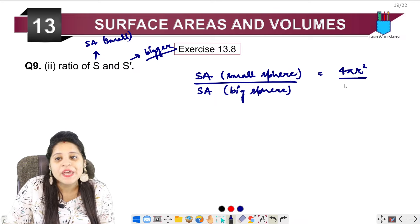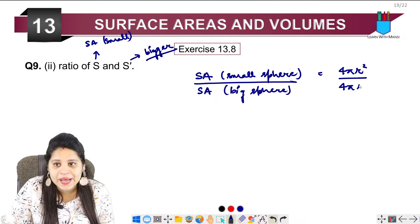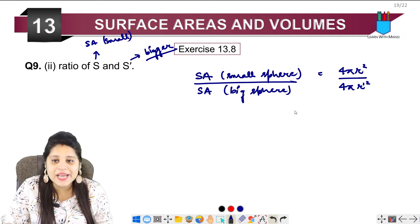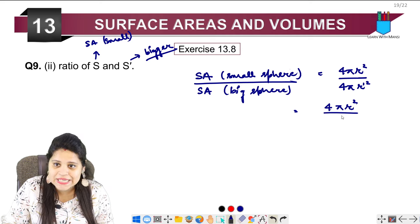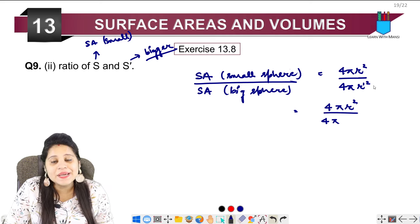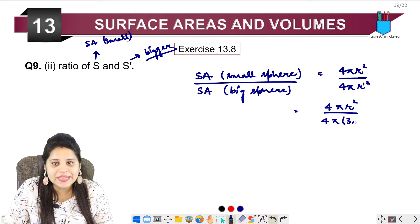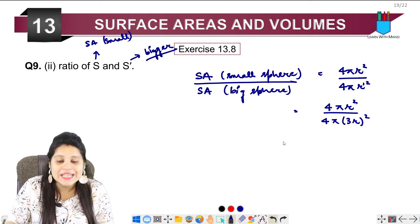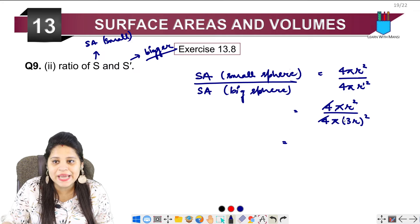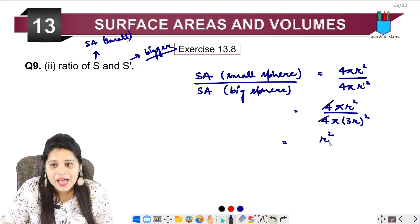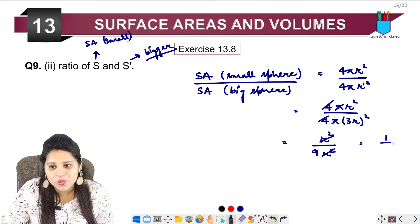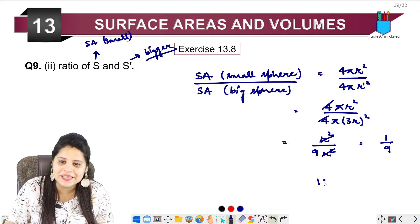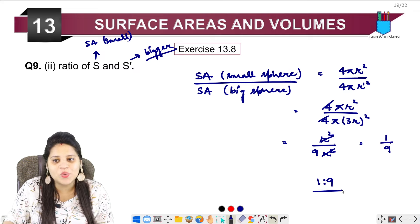The formula is 4 pi r square upon 4 pi r dash square. This will be r square upon - r dash is 3r, so it's 3 squared which is 9 - 9r square. 4 and pi cancel, r square cancels with r square, leaving 1 upon 9. So the ratio is 1:9.